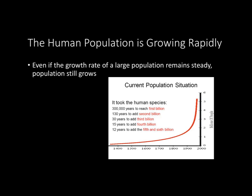The human population is growing rapidly. Even if the growth rate of a large population remains somewhat steady, the population is still going to grow. This graph shows how growth has been very concentrated in recent years. Starting in the 1400s through about the 1900s, it was a slow, gradual increase. But then in the 1900s, especially by the 1960s, population shot up. Now it's starting to level out as we enter the 2000s, but the trend of rapid growth in recent years is clear.